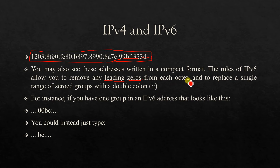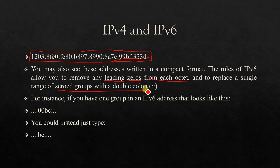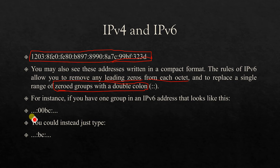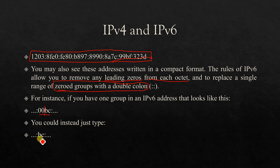You can remove leading zeros from each octet, and replace a single range of zeroed groups with double colons. For instance, if you have one group in an IPv6 address that looks like this, you can use the shorthand. That means those are 1,1 mark and 2,1 mark. If you select the image, it will remove leading zeros from each octet.